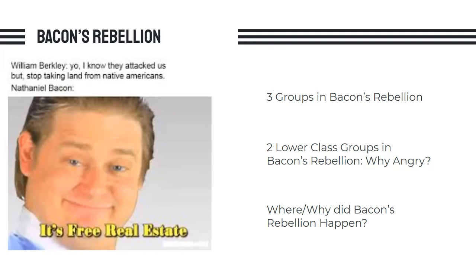The first group you need to know is the white frontiersmen — poor white frontiersmen who were essentially farmers living on the very edge of colonial society, right there on the frontier near the wilderness, living close to Native Americans. They were angry over how the elites were running the colonies, setting up the tax system, and using them. The second group is the indentured servants and slaves, who were angry over the obvious fact that they were essentially enslaved, and also angry over the huge gap between the rich and the poor. They were paying the taxes and they were ready to rebel.